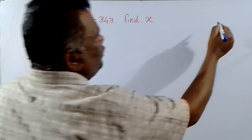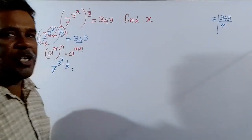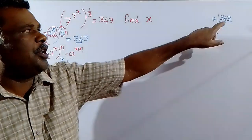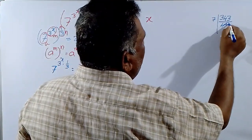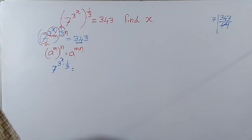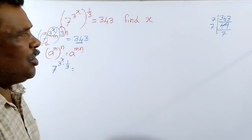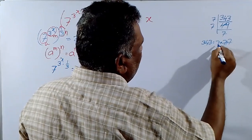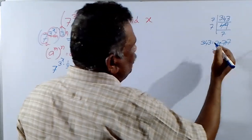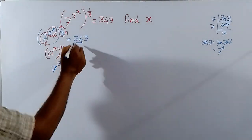So 343 divided by 7, 7 fours are 28, 34 minus 28 is 6, remainder 63. 7 nines are 63. So 343 divided by 7 we get the quotient is 49. Again it is divided by 7, 7 sevens is 49. So 343 can be written as 7 into 7 into 7. That is equal to 7 cube.